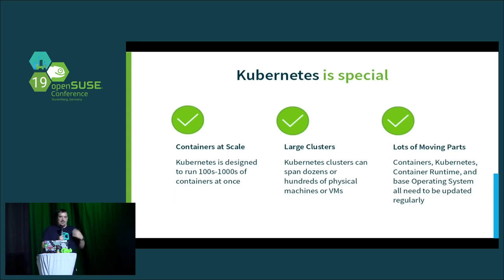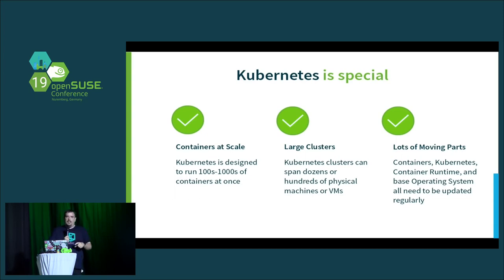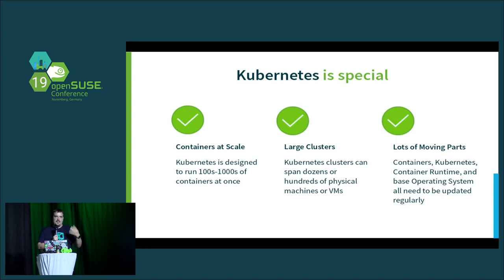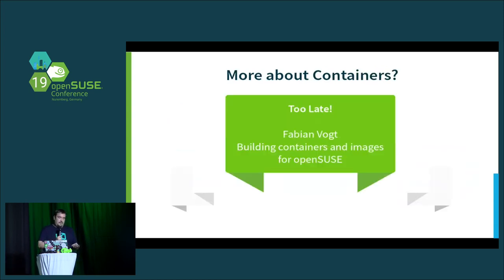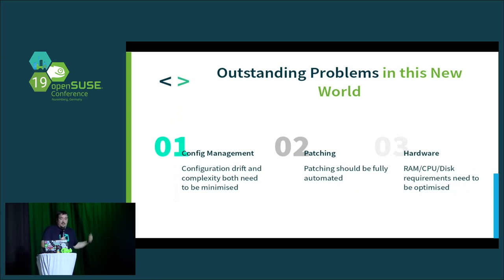Users always want the latest containers, so containers are always moving really quickly. The latest containers probably require the latest Kubernetes, so there's a need for Kubernetes to move quickly. That has an impact on your container runtime — Cryo or Docker — which also needs to move quickly. And that means the base operating system has to move quickly. Somehow all these different parts have to move really quickly and at the same time actually work. It's the traditional problems of configuration management, patching, hardware — just amped up to 11.